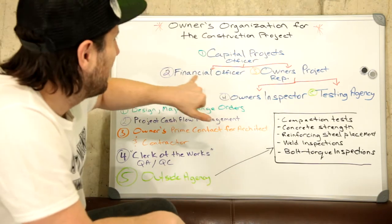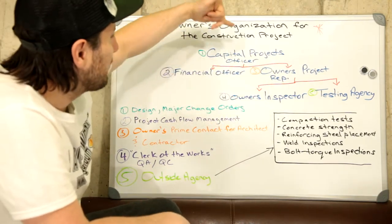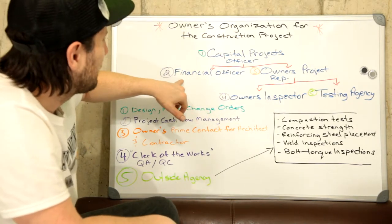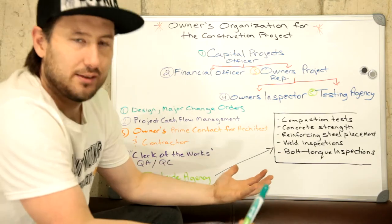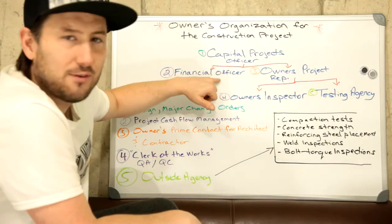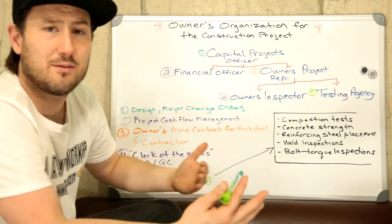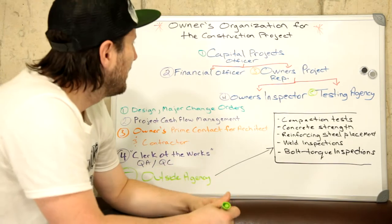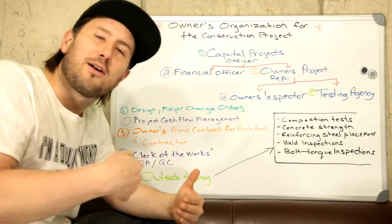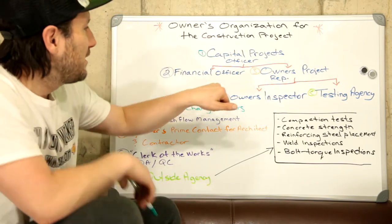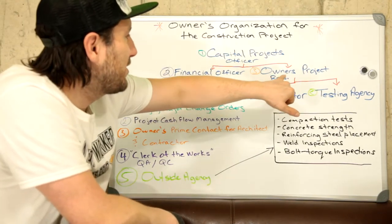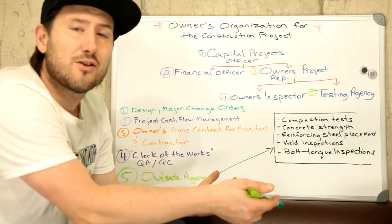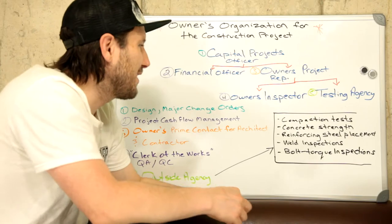The capital projects officer has no indirect relationship — there's just a direct relationship between parties, no agency relationship. The financial officer handles the accounting. In medium to large firms there will be an accounting department that processes all the progress payments and things like that.